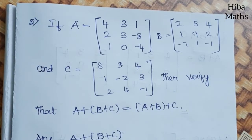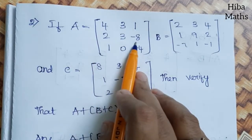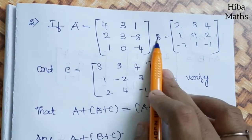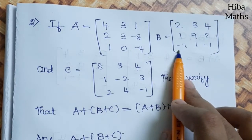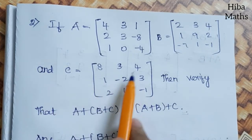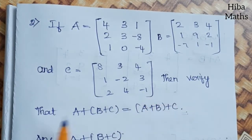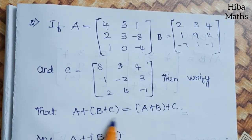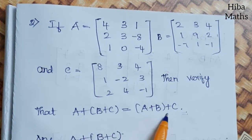Friends, welcome to Hibamax 10th Standard Max exercise 3.18, second question. If A = [4,3,1; 2,3,-8; 1,0,-4] and B = [2,3,4; 1,9,2; -7,1,-1] and C = [8,3,4; 1,-2,3; 2,4,-1], then verify the statement A + (B + C) = (A + B) + C.